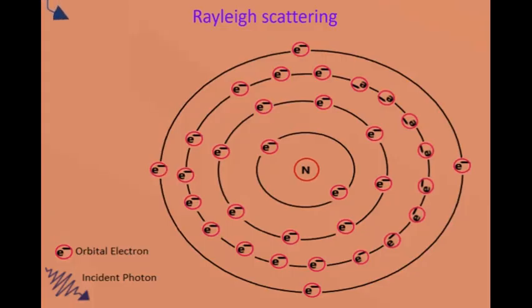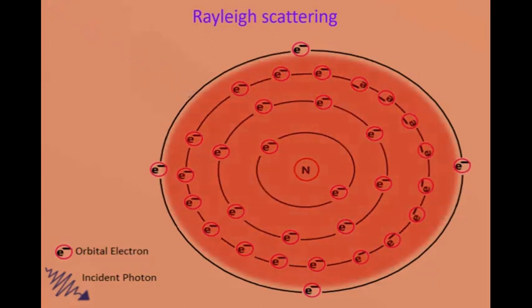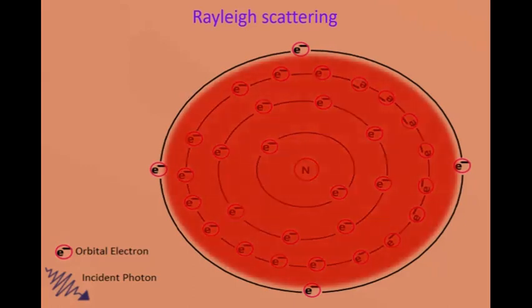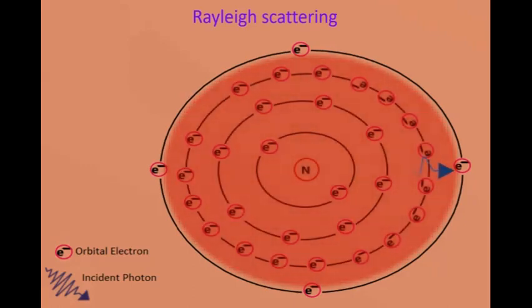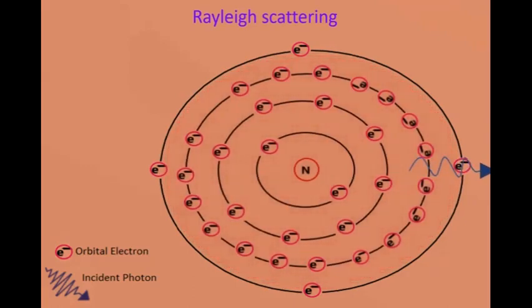What is coherent scattering? Coherence in physics means two things having same frequency or energy and both are in same phase. In cases of scattering of photon with matter, if scattered photons have same energy or frequency, we call it coherent scattering.